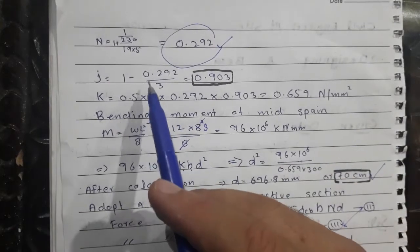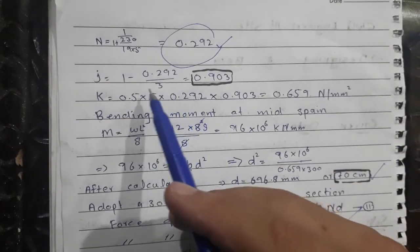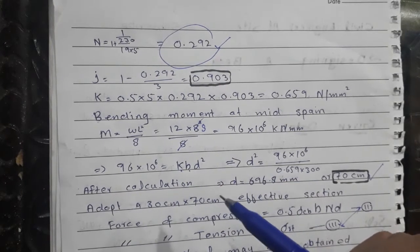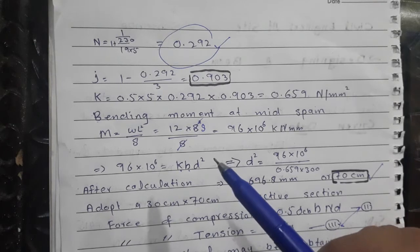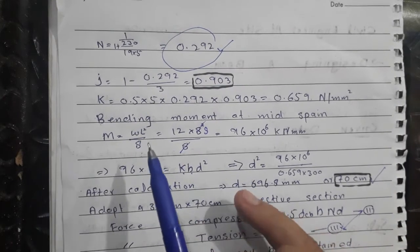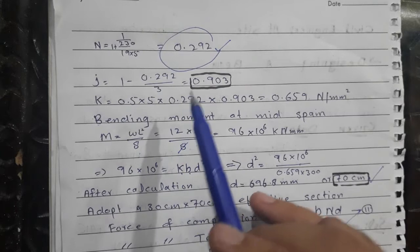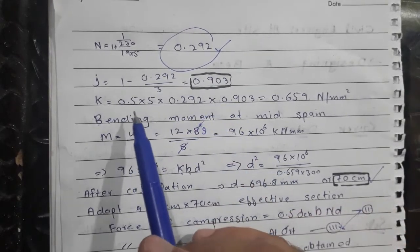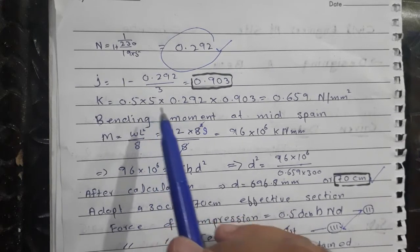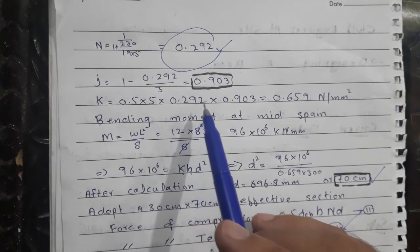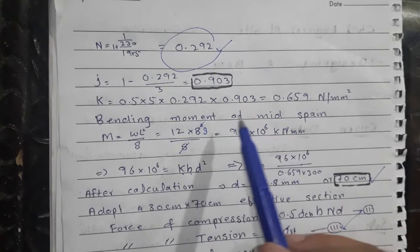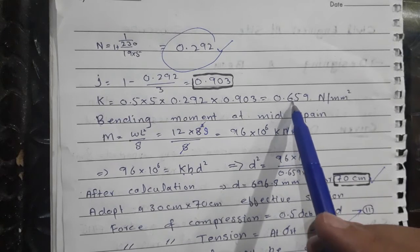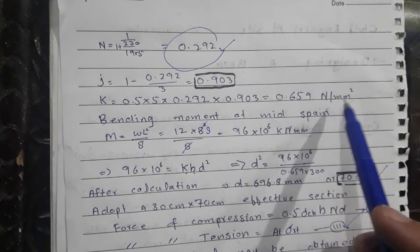The lever arm j = 1 minus n divided by 3. After calculation, j = 0.903. Then putting the values of n and j into the K formula: K = 0.5 × 5 × 0.292 × 0.903. After multiplying, K = 0.659 N/mm².